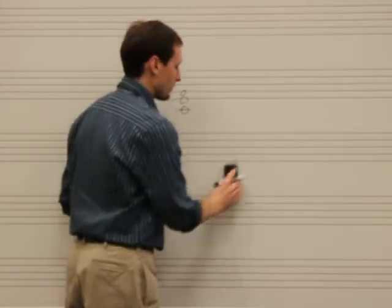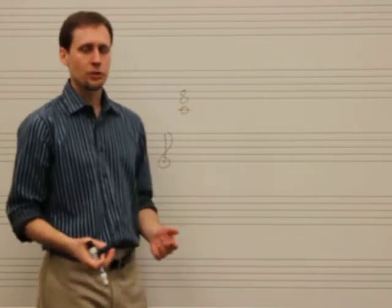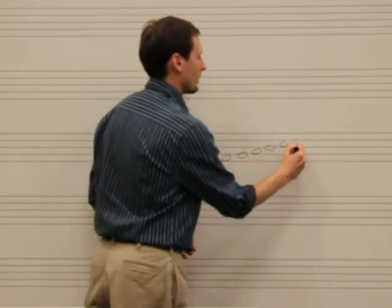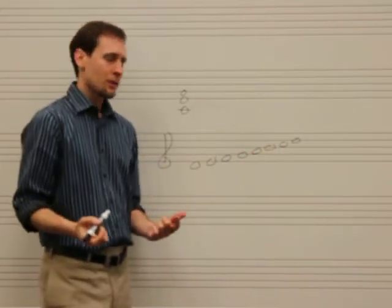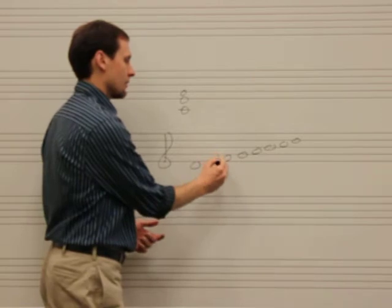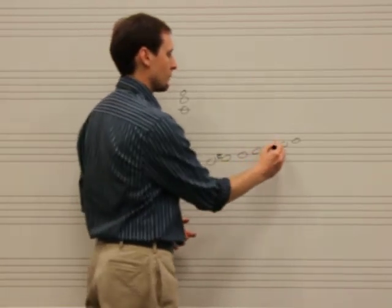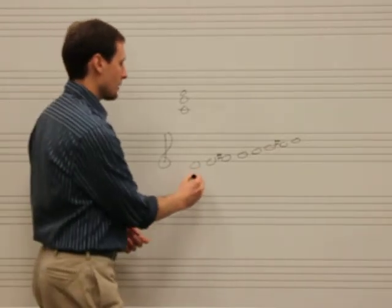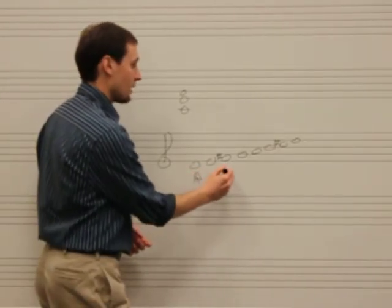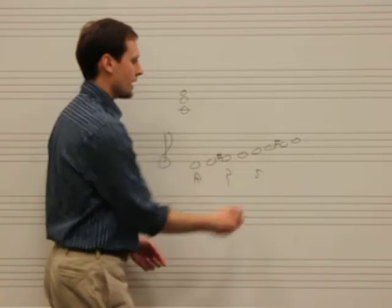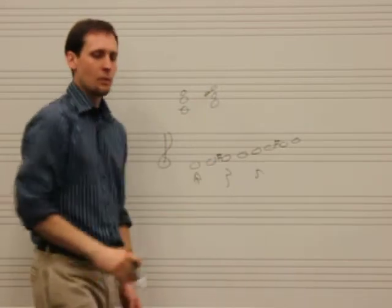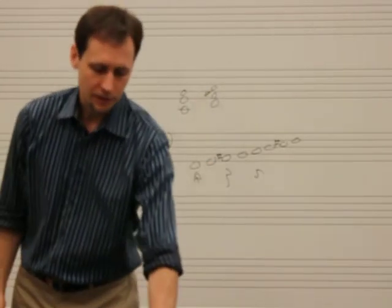For instance, if we wanted to build a D major triad, let's look at the D major scale. You remember from the work we did with major scales that the D major scale has F sharp and C sharp. So we still want the root, third, and fifth, but it has to be D, F sharp, and A, and that's what creates a major triad.